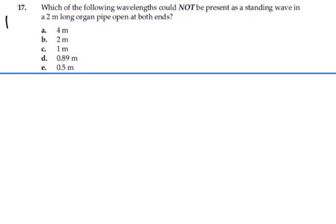Here's problem 1817. Which of the following wavelengths could not be present as a standing wave in a 2 meter long organ pipe open at both ends?